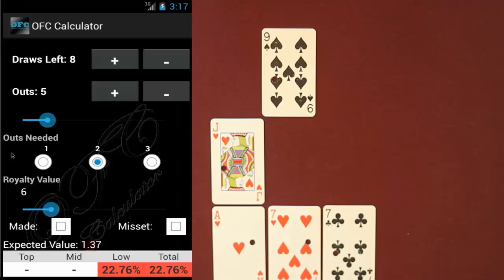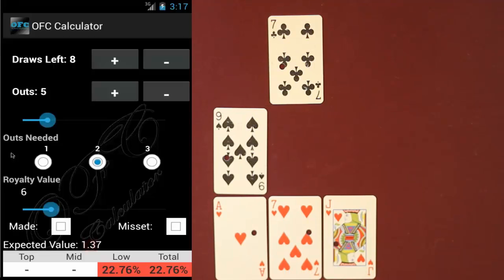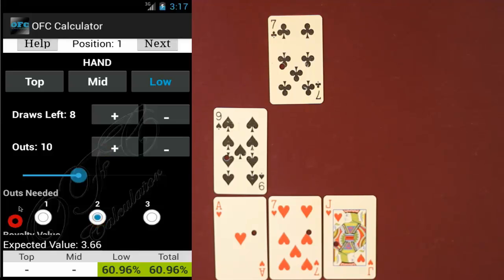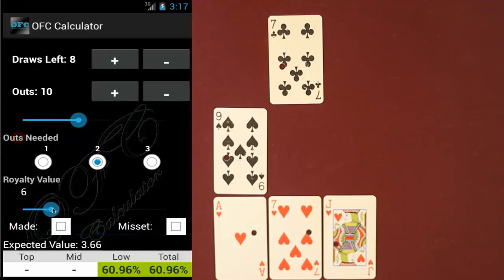Another way you could play this hand is by putting the three hearts on bottom. Now you would change your outs to ten because there are ten hearts left in the deck. Your outs needed is still two but now your royalty value drops to four. Now you can see that your expected value has gone up to 2.44 and your odds of hitting the flush are actually 61%.